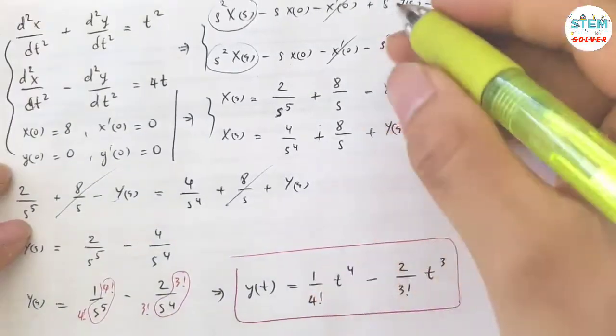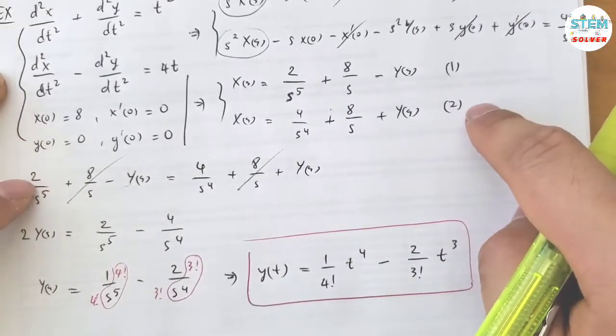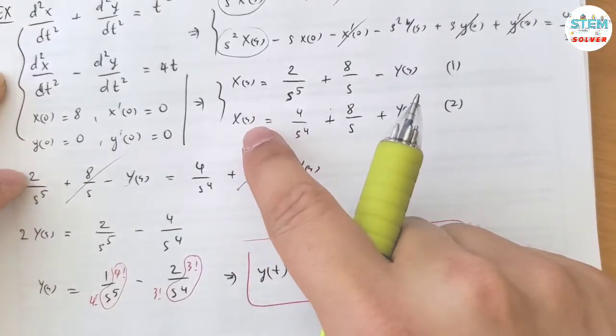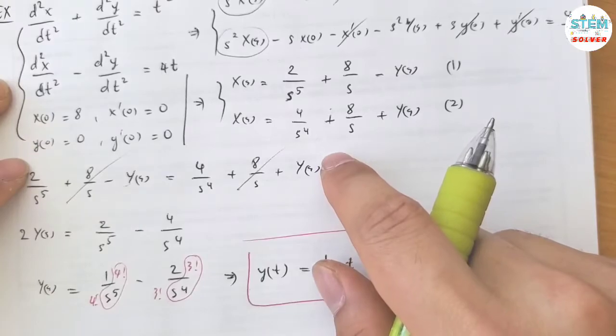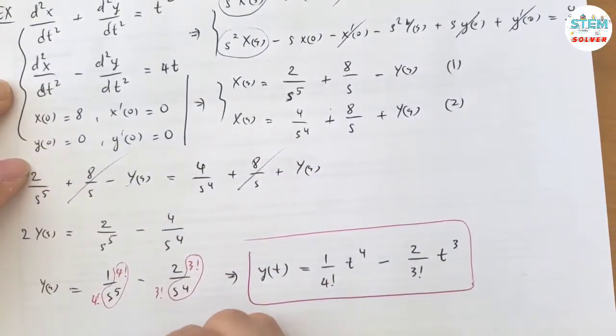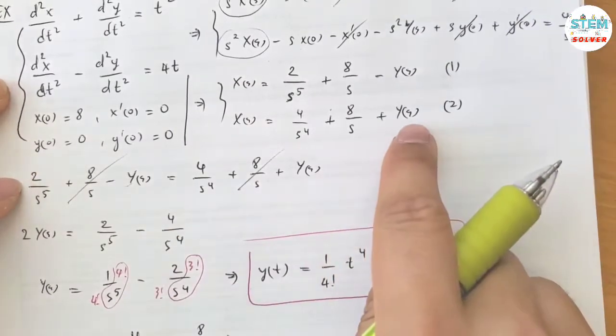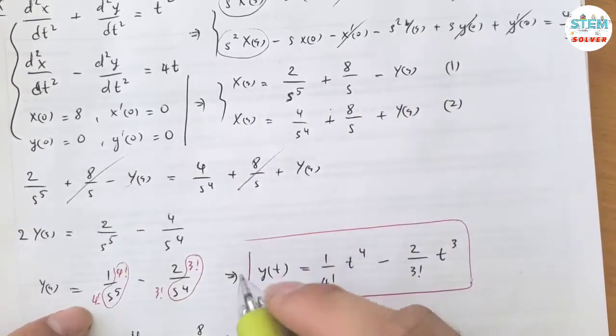So I'm gonna call this equation 2. Use either equation 1 or equation 2 to solve for x(t). I will use equation 2. So X(s) equals 4 over s to the fourth plus 8 over s plus capital Y(s), and capital Y(s) is equal to this.